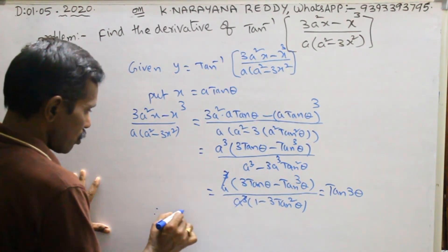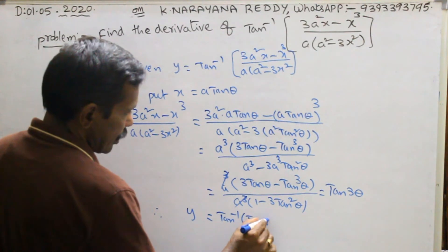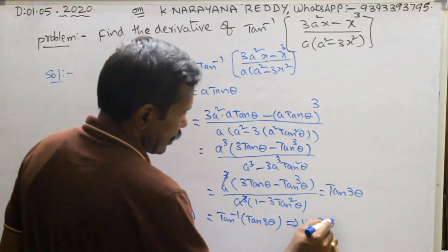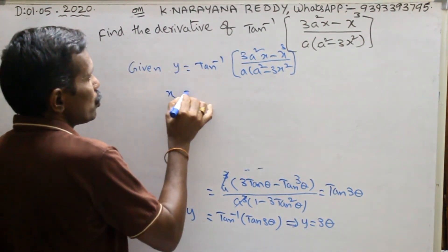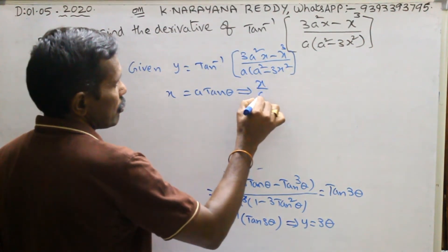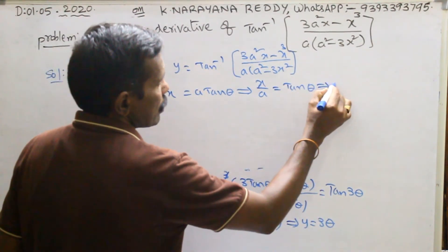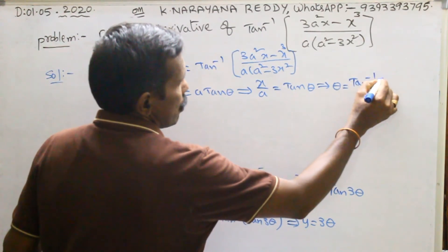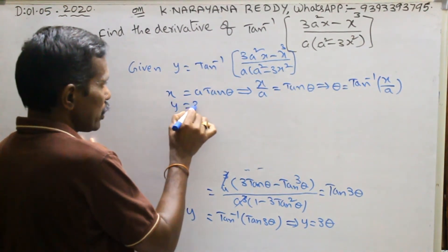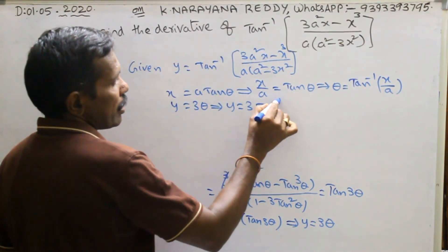Therefore y equals tan inverse of tan(3θ), which gives y equals 3θ. Since x = a·tan(θ), we have tan(θ) = x/a, which implies θ = tan inverse of (x/a). So y = 3θ means y = 3·tan inverse(x/a).